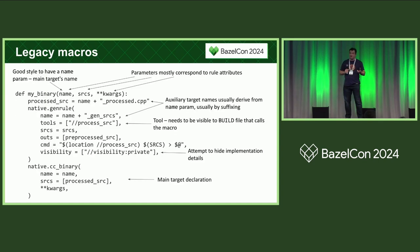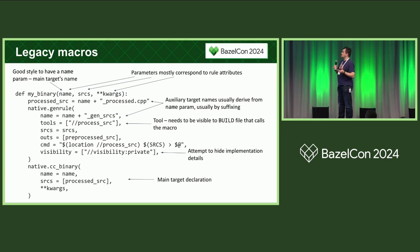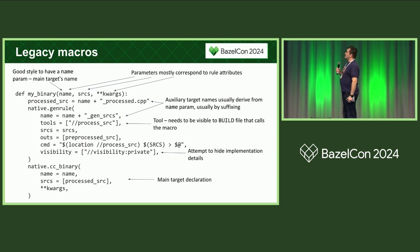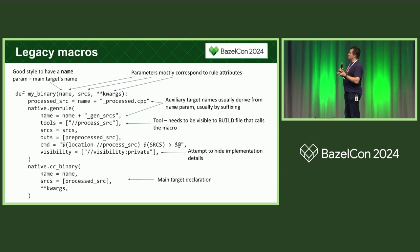Let's look at a very typical example. Here we have a legacy macro which takes a collection of source files, runs them through a tool to generate a single CPP source file, and then builds that CPP source file to get a single executable binary. The parameters to the legacy macro more or less correspond to rule attributes. The first parameter, by convention, is the name, which corresponds to the name of the so-called main target — in this case, the native CC binary target. The names of the other targets are derived from the name parameter, typically by suffixing.